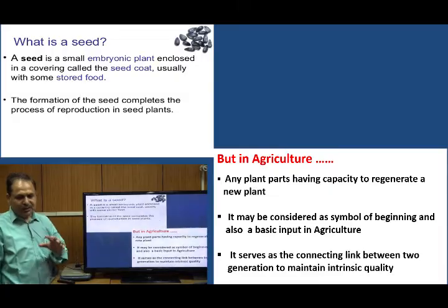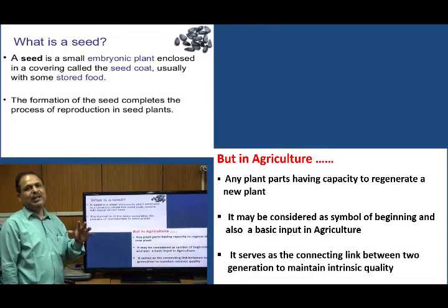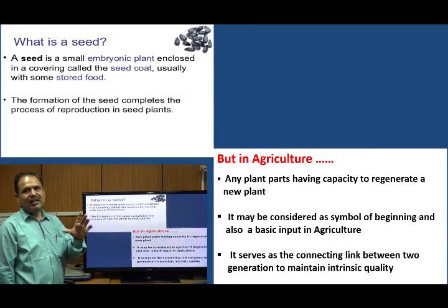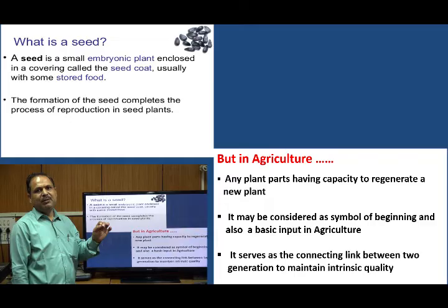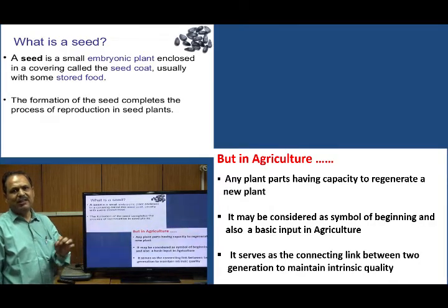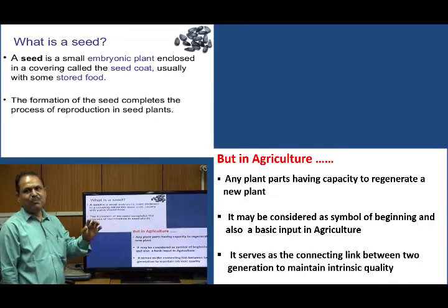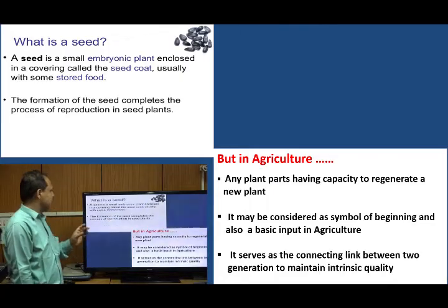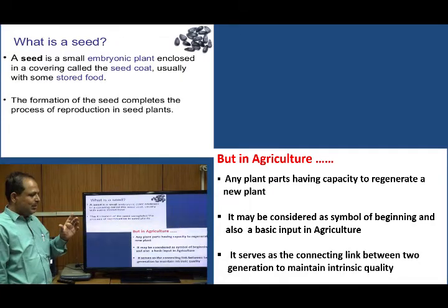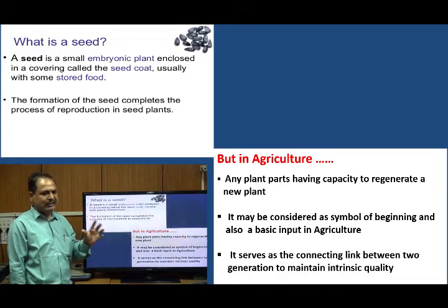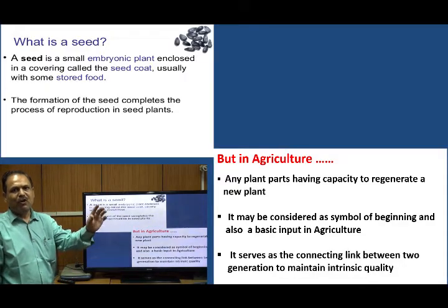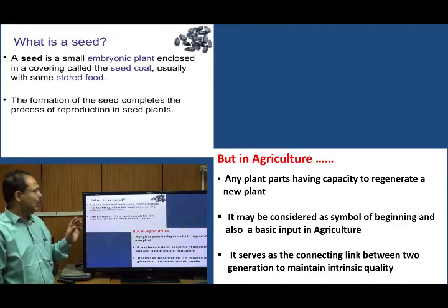In case of dicotyledon seeds, these parts are easily observable, but in case of monocot seeds, these are not much more observable. In the case of monocot, this is diffused in the form of scutellum.